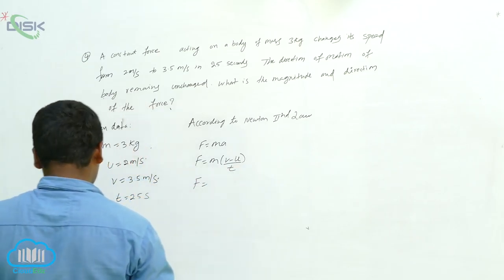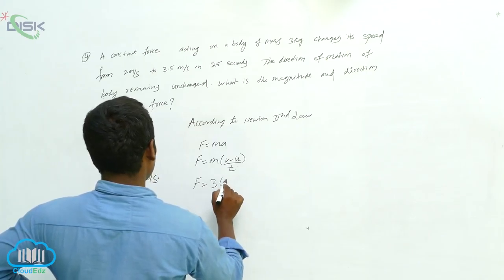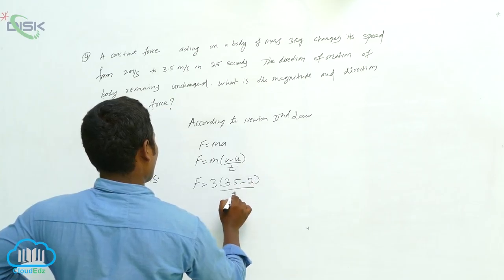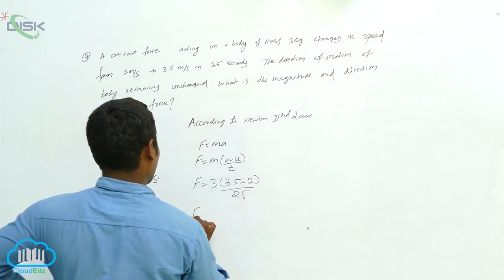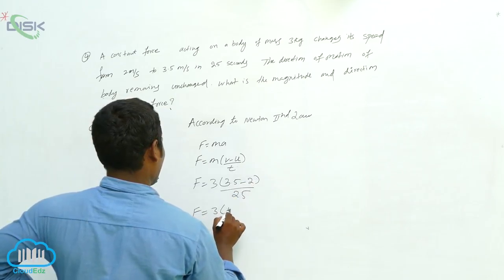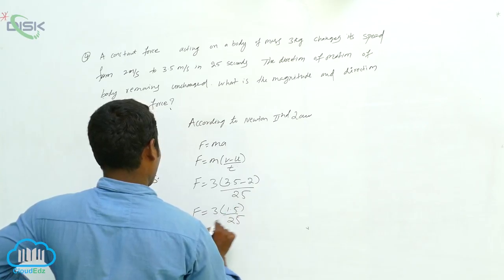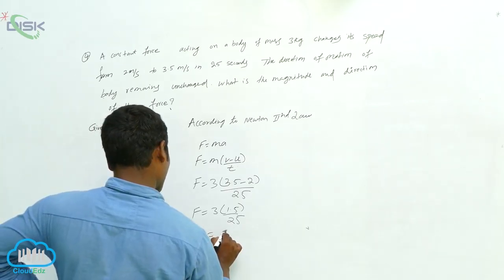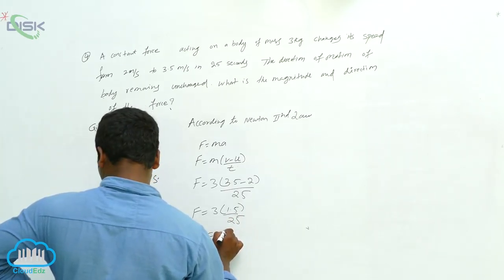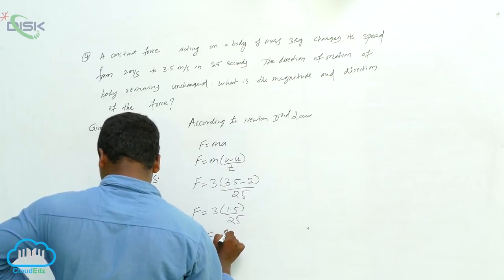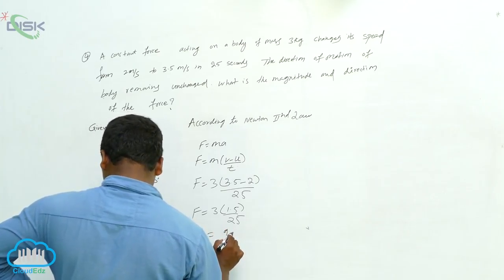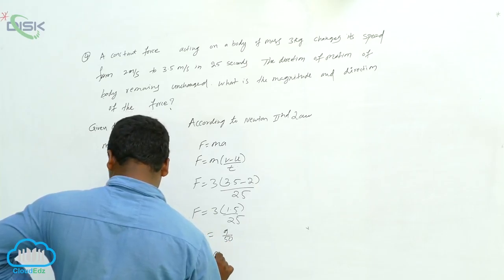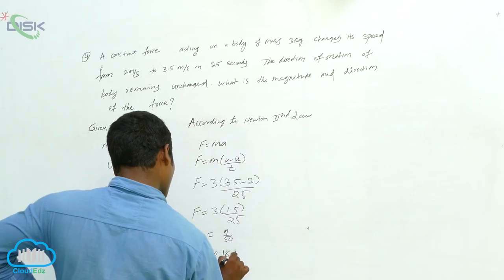m is equal to three. Calculating, we get nine by fifty, so F is equal to zero point one eight newtons.